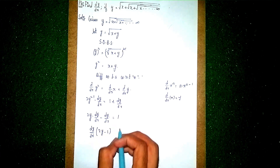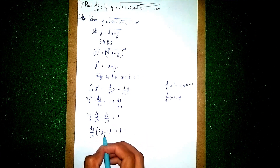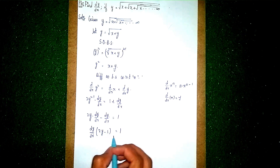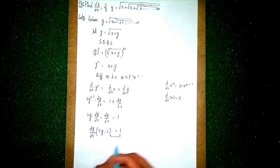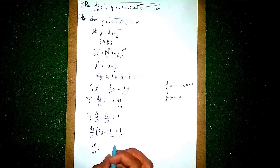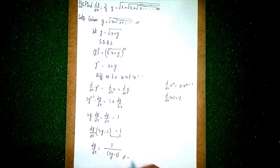We want only dy/dx, so send dy/dx to the left side. Taking dy/dx common: dy/dx times (2y minus 1) equals 1. Since 2y minus 1 is multiplying, dy/dx will divide to the other side. So dy/dx equals 1 divided by (2y minus 1). This is our answer. Thanks for watching!